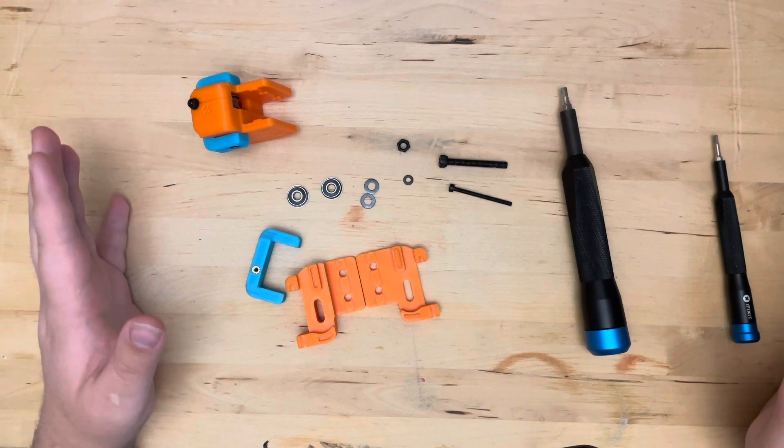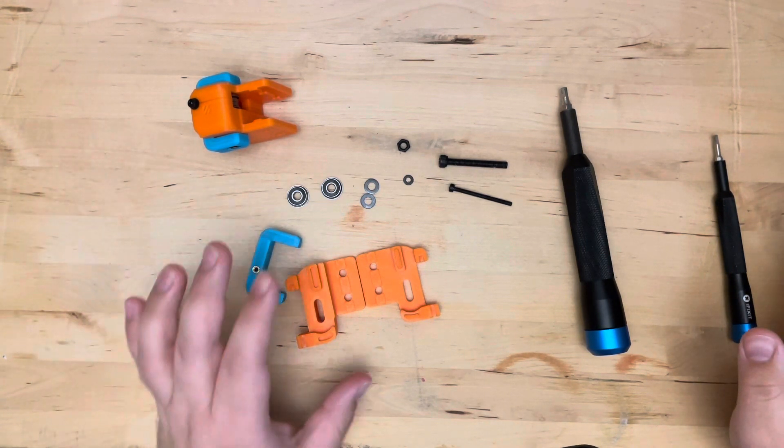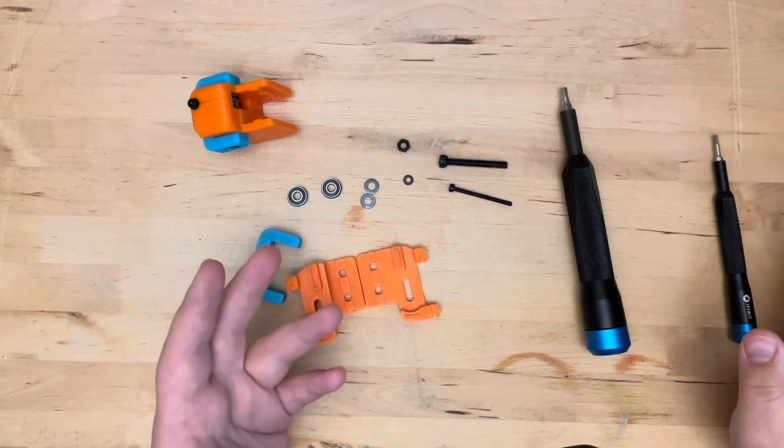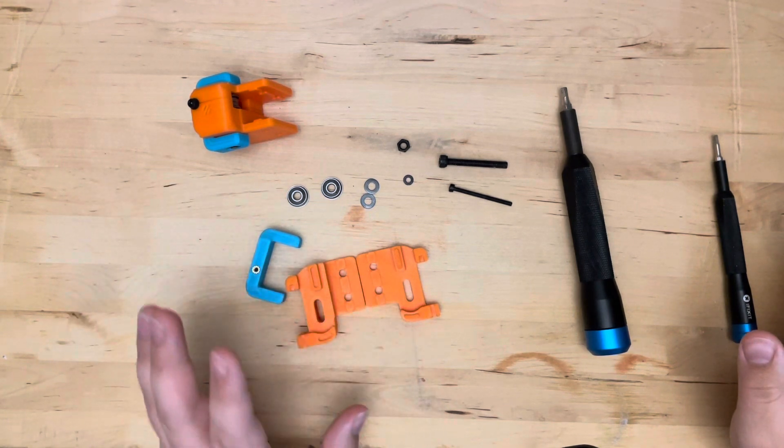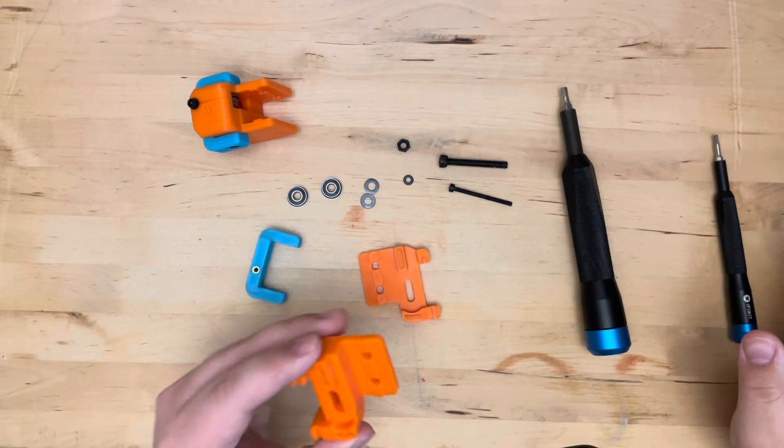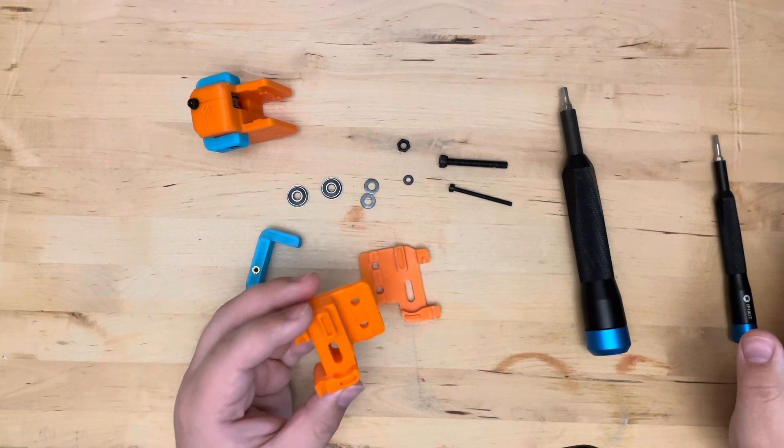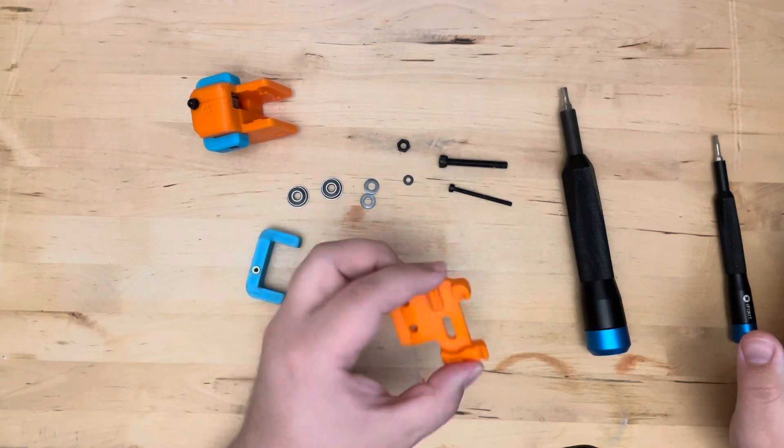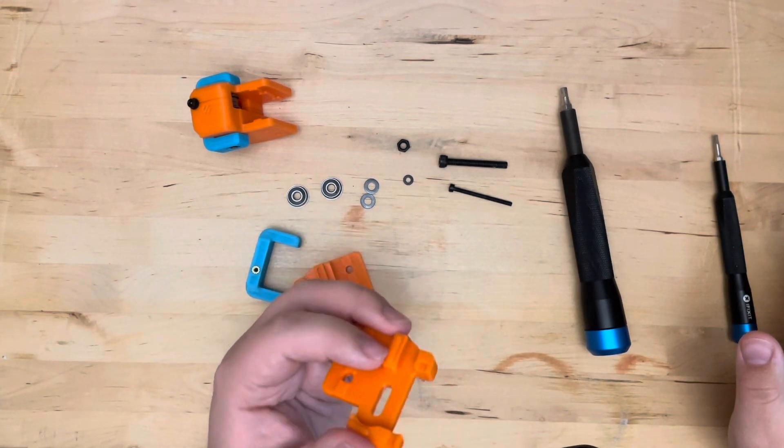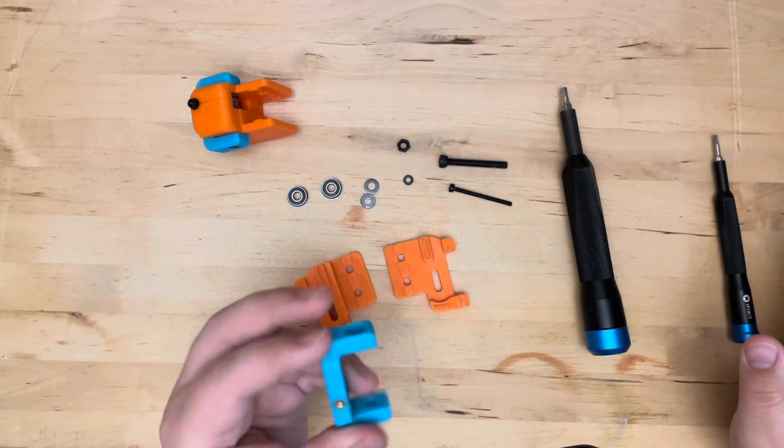Alright, so let's get started with the assembly. The parts that you're going to need are the printed parts, and because we're building two tensioners, you're going to need two sets of the parts. So that means you need to print the idler A twice, and the idler B, which is the one here with the raised segment, twice, and you're going to need to print two of these tensioners.